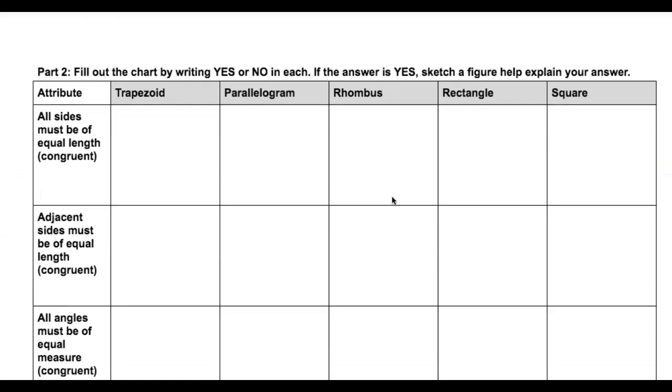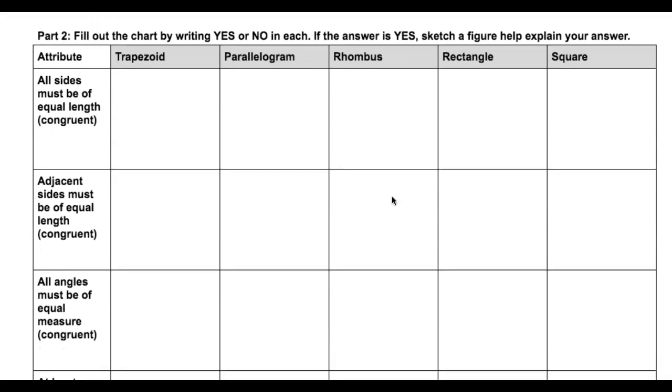Okay, part two. Fill out the chart by writing yes or no. If the answer is yes, sketch the figure to help explain why it's yes. So all sides must be of equal length or congruent. Is that true for a trapezoid? Is that true for parallelogram, rhombus, rectangle, and square?